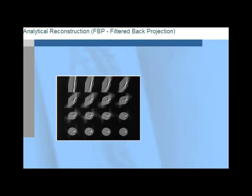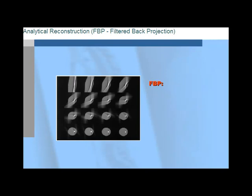When we break down various technological components of PET and discuss reconstruction, we can't skip filtered back projection, or FBP. By processing each individual projection with a filter prior to back projection, FBP improves overall quality. This method is fast and uses less computing power. Furthermore, despite the fact that more elegant, iterative, and analytical techniques have been devised, FBP is still widely used in commercial instrumentation because of history and its ease of use and implementation.